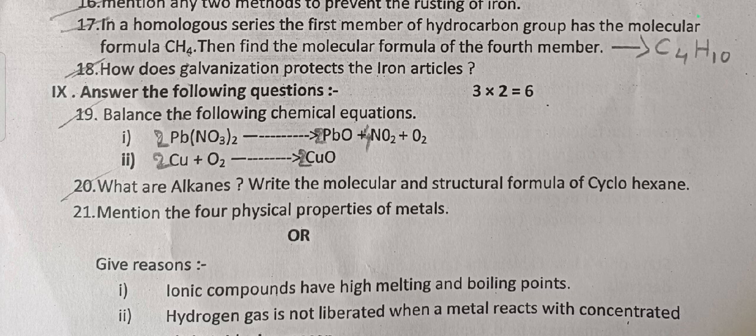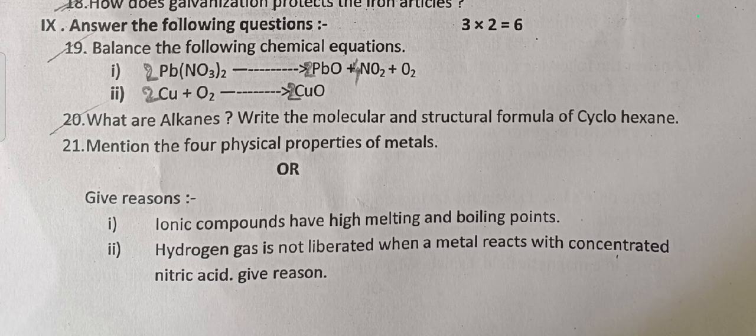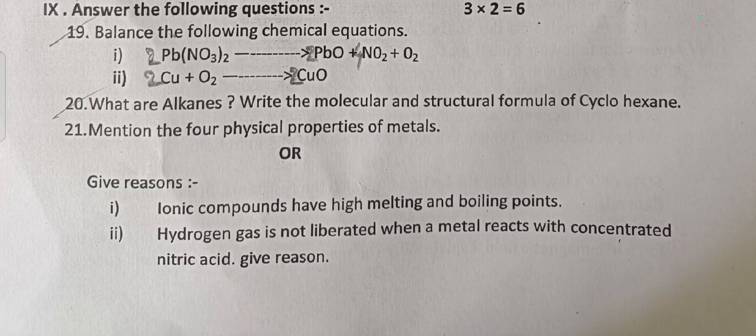Question 20: What are alkanes? Write the molecular and structural formula of cyclohexane. Mention four physical properties of metals. Or: give reason — ionic compounds have high melting and boiling points. Next: hydrogen gas is not liberated when a metal reacts with concentrated nitric acid — give reason.